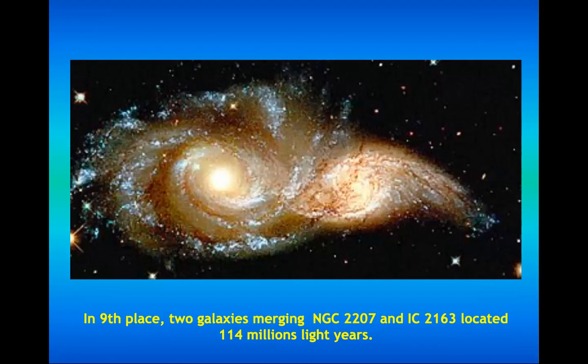In ninth place, two galaxies merging — NGC 2207 and IC 2163, located 114 million light years away. We can't reach this part in space because even if we traveled at the speed of light, we couldn't get there within 100 years. But they're merging — and maybe now they're already merged since this image is 114 million years old. Take note, we're talking about galaxies. Our Milky Way is just one average galaxy, and we are also merging with the Andromeda galaxy, the closest galaxy.